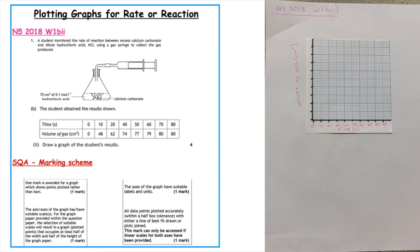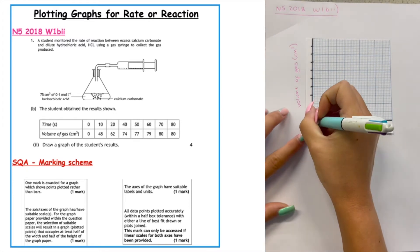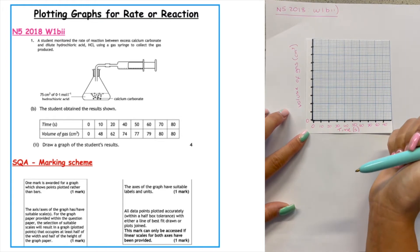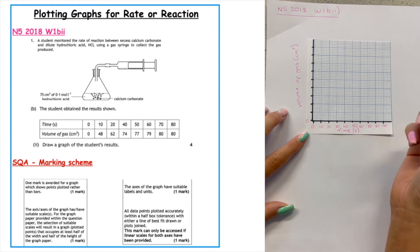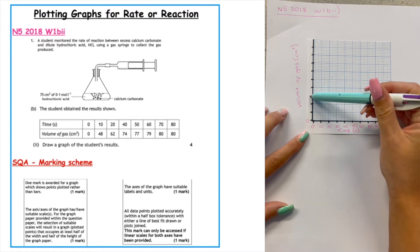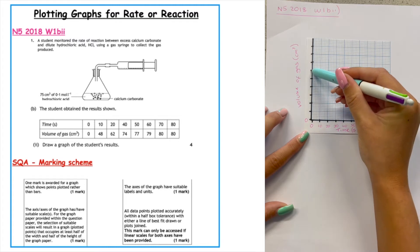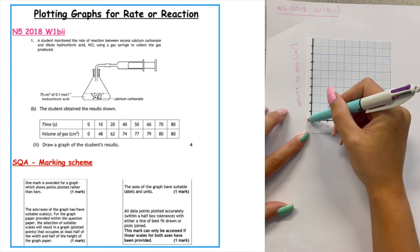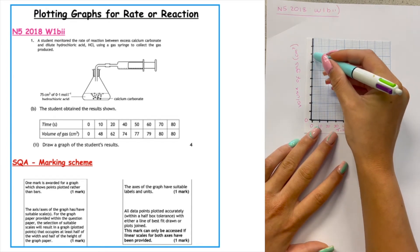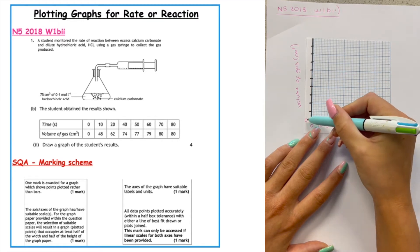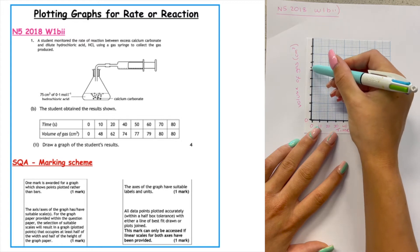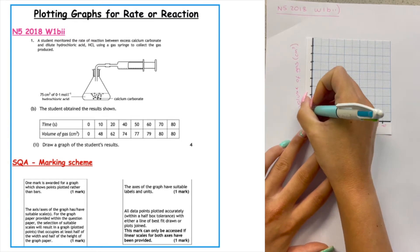The harder part is working out the appropriate scale for the volume of gas. The lowest value is zero and the highest value from the table is 80. I use the rule: try going up in ones, then twos, then fives, then tens. Can I go up in ones to reach 80? No. Twos? No. Fives? No. Tens — zero, ten, twenty, thirty, forty, fifty, sixty, seventy, eighty — yes, that works. So we go up in tens on this scale too, and that gets us two marks.